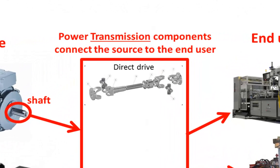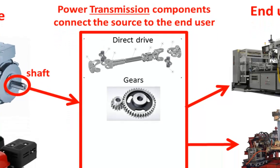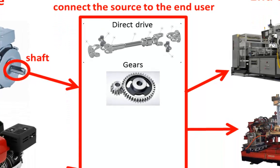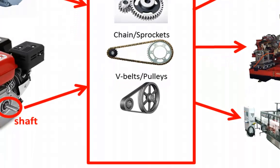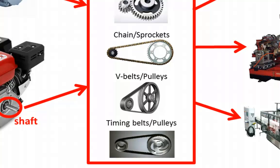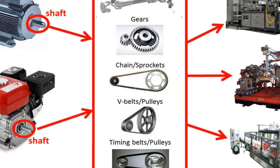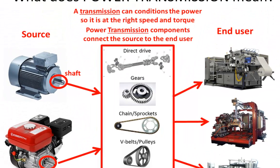This can be accomplished in many ways. A direct drive allows the moving part of the machine to rotate at the same speed as the power source. Gears can be used to reduce speed and increase torque. Chain and sprockets also transmit mechanical power and can reduce speed and increase torque. V-belts and pulleys are another way of transmitting power. Timing belts and pulleys are also common. A transmission can condition the power so that it is at the right speed and torque that the machine needs.